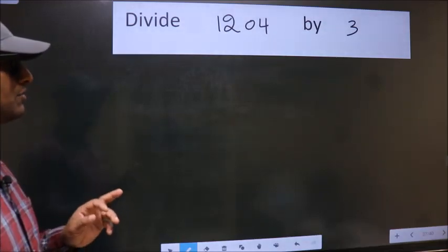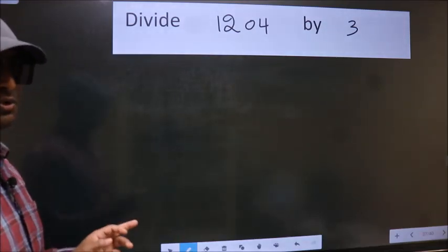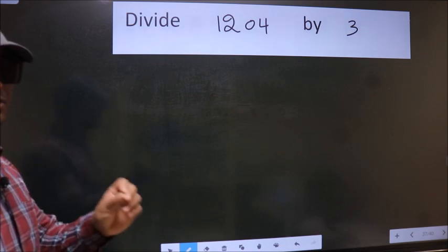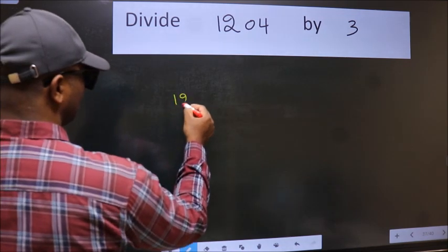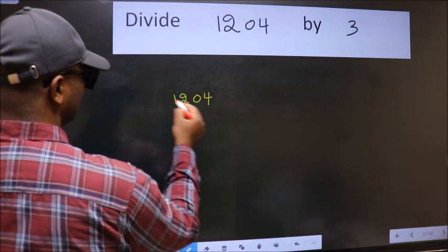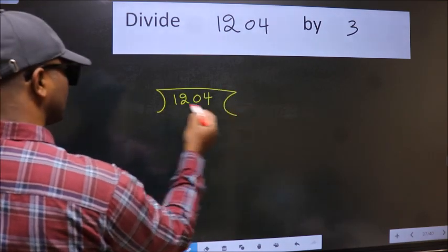Divide 1204 by 3. To do this division, we should frame it in this way: 1204 here, 3 here.